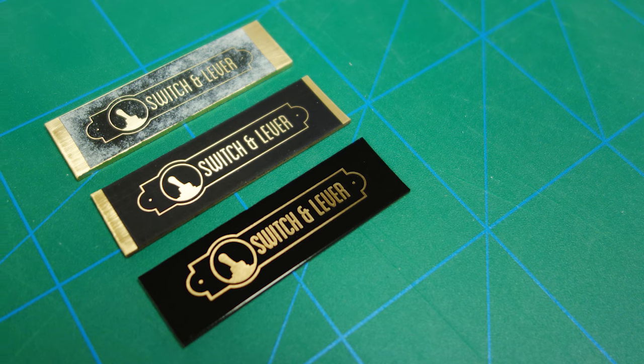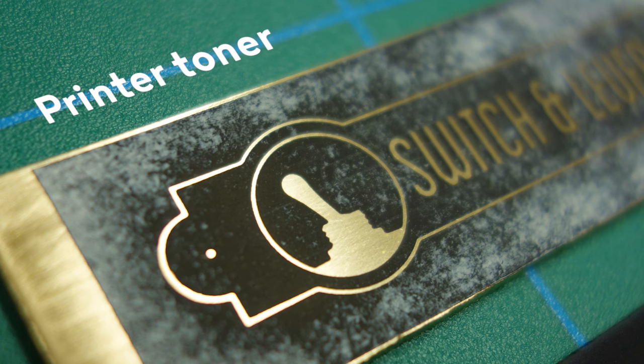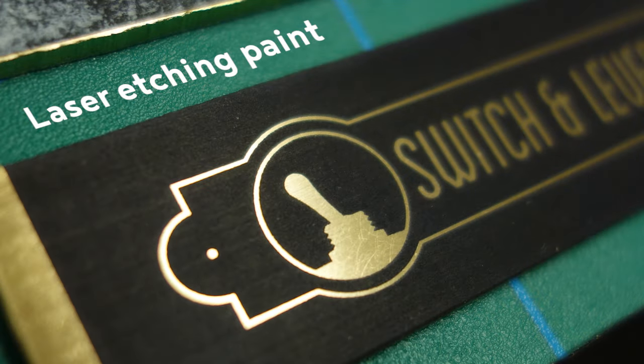Now we have our three plaques ready for etching. Right now there's not much difference between them, aside from the black spray paint one looking perhaps a little bit thicker than the other two.